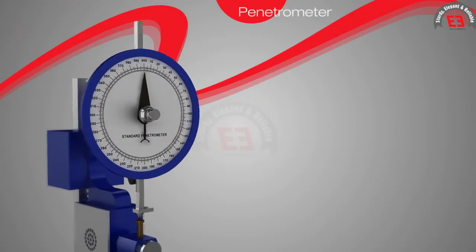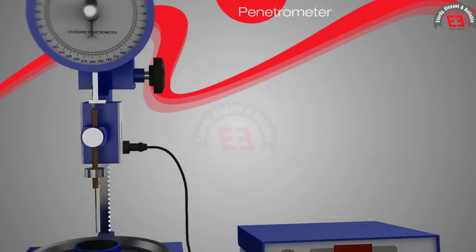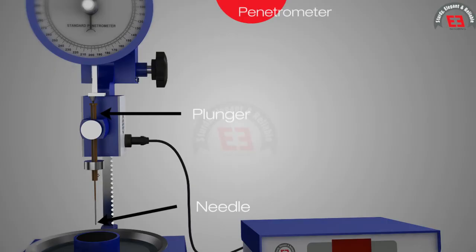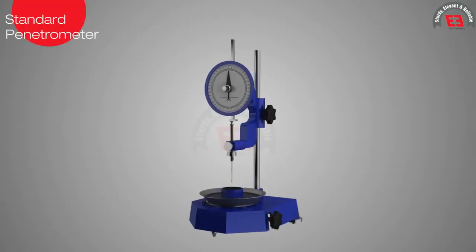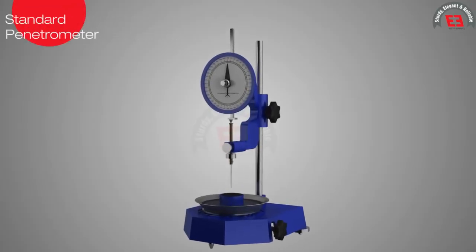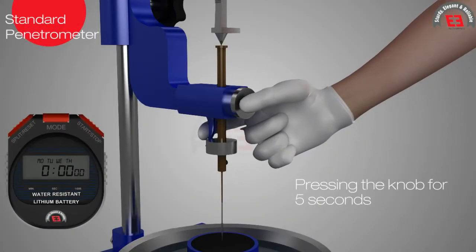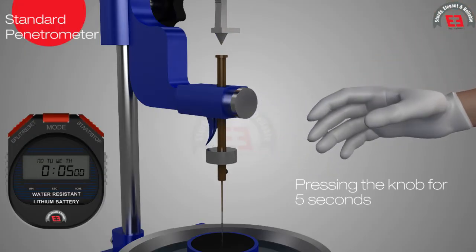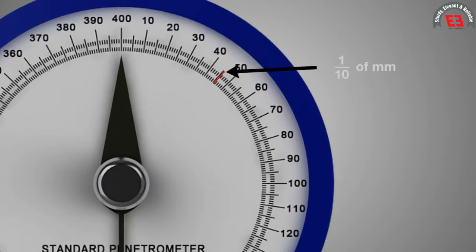Penetrometer. This apparatus consists of a penetration needle with plunger and weight assembly which is attached to a calibrated dial. In standard penetrometer, on releasing the penetration needle by pressing the knob for 5 seconds, it penetrates into the bitumen specimen without appreciable friction and gives penetration value in units of one-tenth of a millimeter.